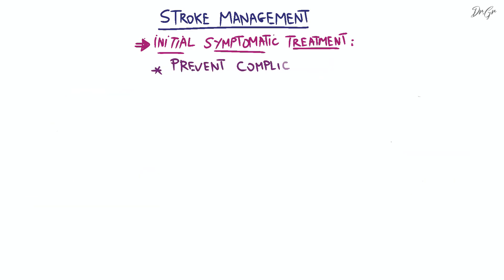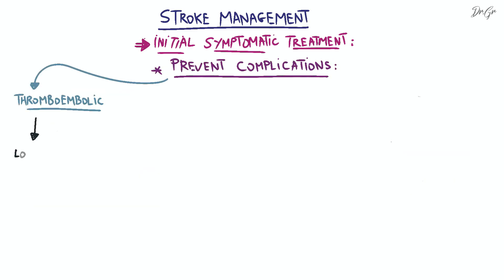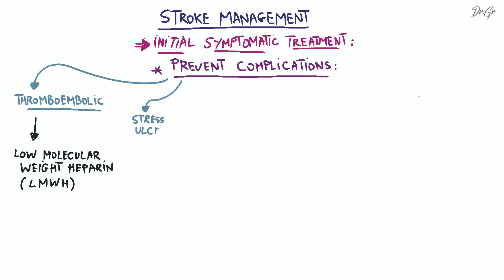To prevent thromboembolic complications, we use low molecular weight heparin, and stress ulcer prophylaxis with proton pump inhibitors.